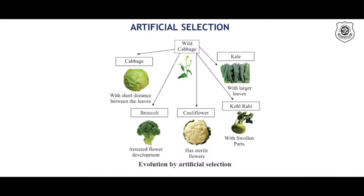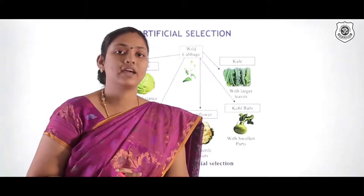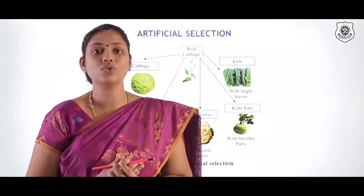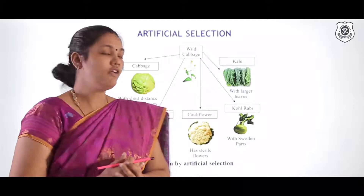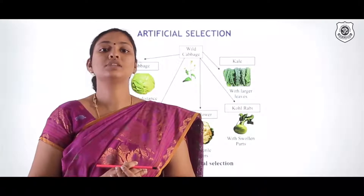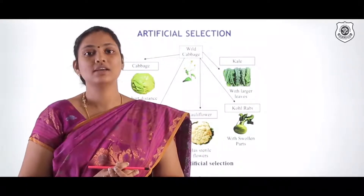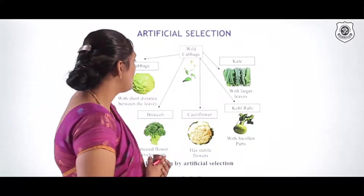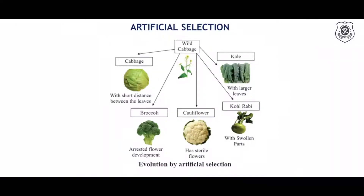Artificial selection: we've seen what evolution is, what classification means, and the relationship between them. Now we'll see about artificial selection, where humans have intervened in nature's products, leading to many diverged varieties. Take the example of the cabbage family — the wild type is the original cabbage form selected by nature.